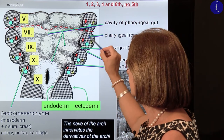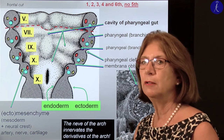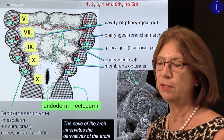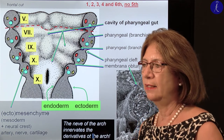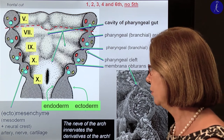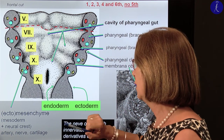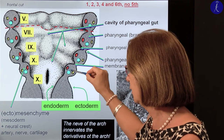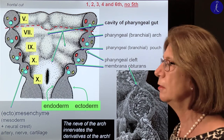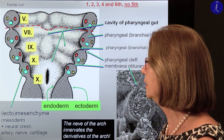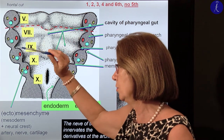The arches are filled with mesenchyme — so-called ectomesenchyme — because partially it comes from the mesoderm and partially from the neural crest. The neural crest is a miraculous piece of tissue closed out from the neural tube ectoderm. In the head and neck region it contributes to mesenchymal tissue formation together with the mesoderm, forming the ectomesenchyme. Within this ectomesenchyme there will always be an artery, a nerve, and a cartilage. The nerves are very important: the nerve of the first arch is the fifth cranial nerve (trigeminal).